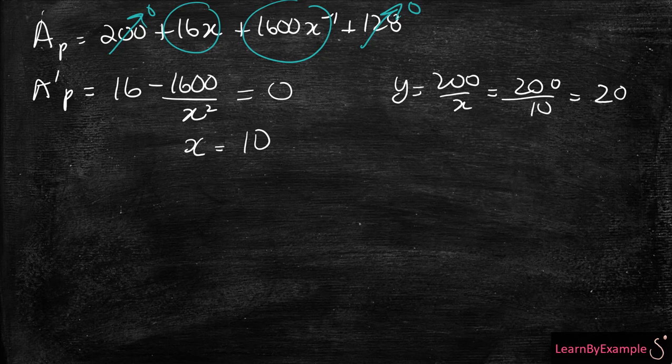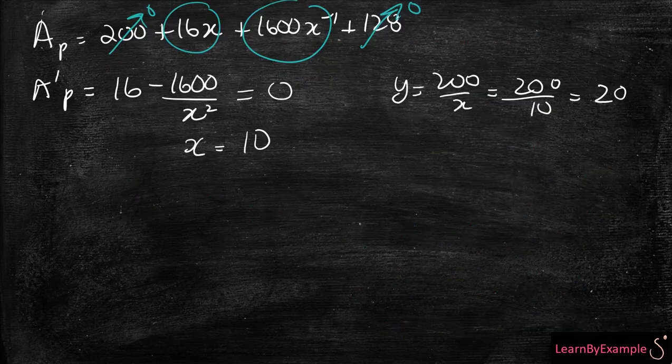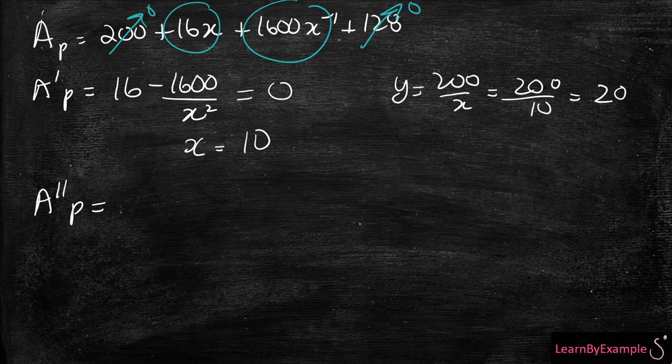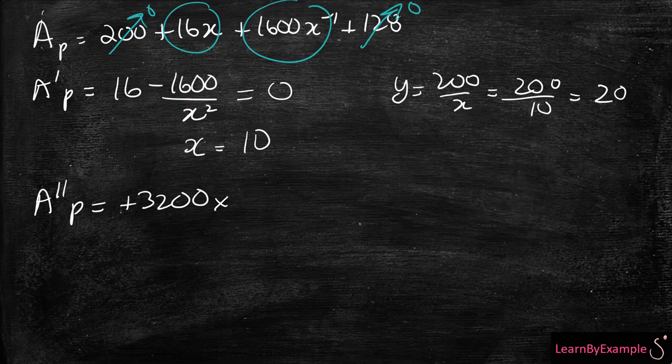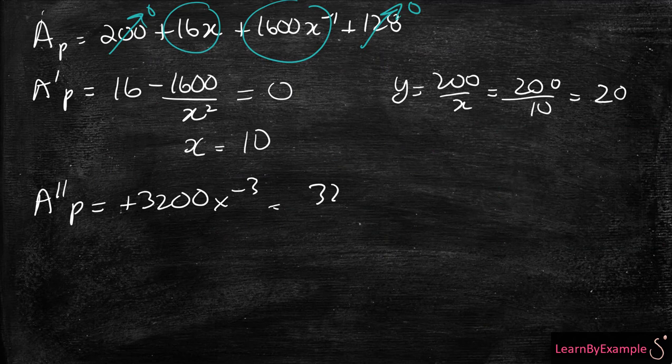So now you have the dimensions of X and dimensions of Y, which is perfect. Most importantly, we have to check that this is in fact the minimum area. So you have to take the second derivative. Let's do that together. So the 16 is going to go to 0, and it's going to be positive 3200X minus 3.